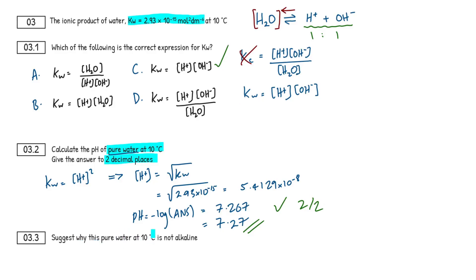Okay, question 3.3 then. Suggest when this pure water at 10 degrees Celsius is not alkaline. So, it's only a one-mark question here. We don't have an explain command word, just suggest, just get something on the page. And we've just calculated that the pH of our pure water at 10 degrees Celsius is 7.27. So, even though this is slightly above 7, it would still be considered neutral. Now, it's said here, why is pure water not considered alkaline at 10 degrees Celsius? And the reason being that, if we have our KW expression right here, and we've made the assumption that H plus concentration equals OH minus concentration, it has to be neutral. And the reason being that, for it to be alkaline or basic, the OH minus concentration has to be greater than the H plus concentration. That's just how it works.